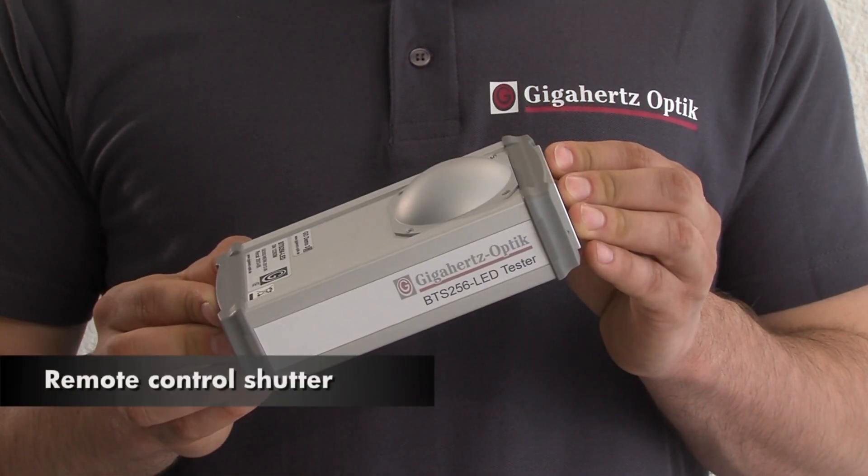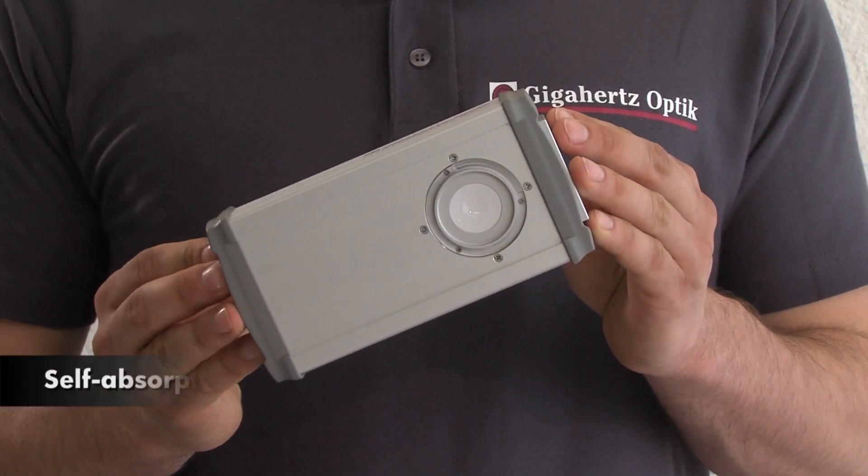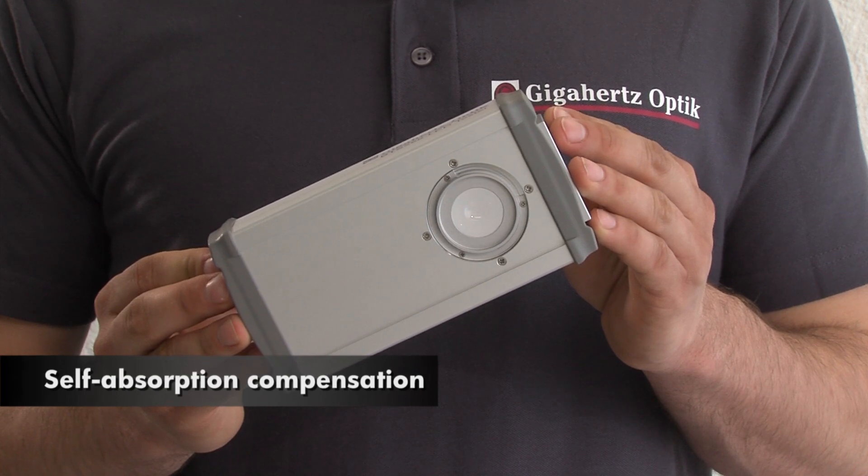An integrated shutter provides dark noise signal compensation of the diode array. Plus, a built-in auxiliary lamp enables self-absorption correction.